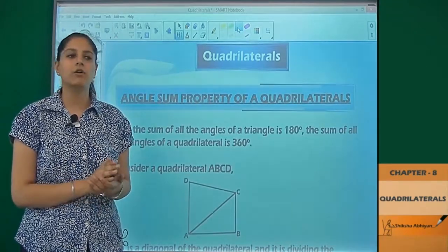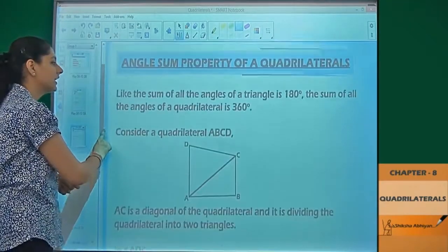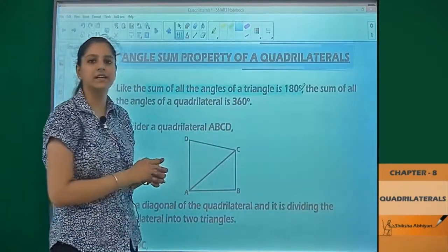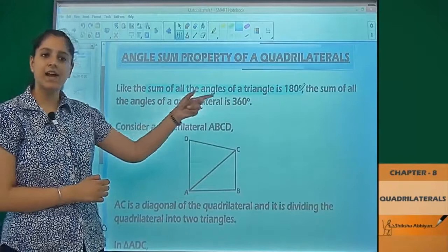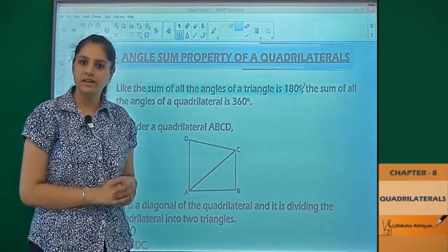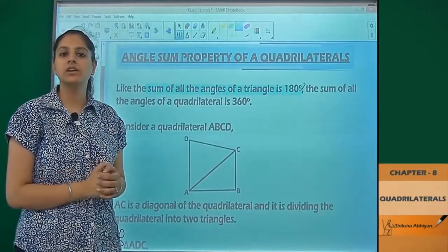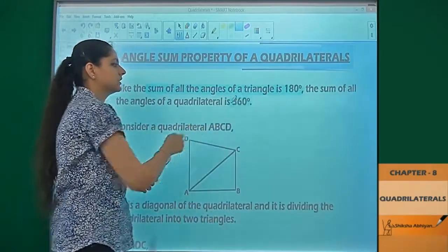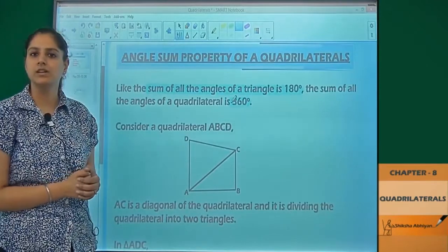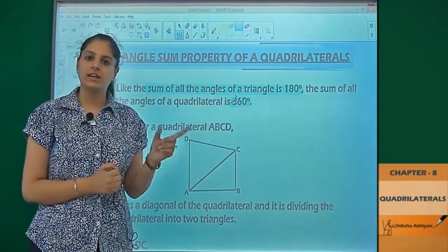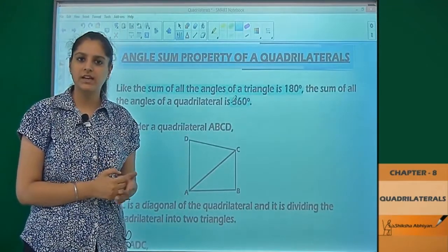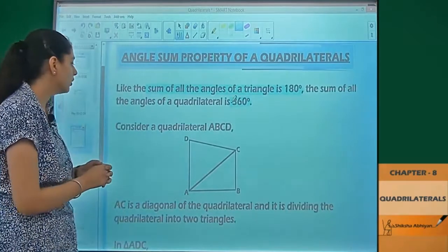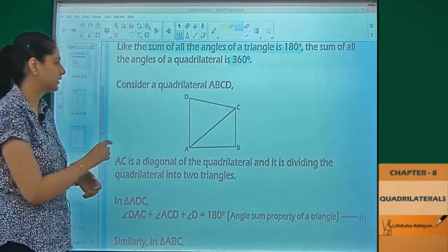This is the angle sum property of a triangle. In a triangle, the sum of all the angles is 180 degrees. Just as the sum of a triangle's three angles is 180 degrees, similarly the sum of a quadrilateral's four angles is 360 degrees. Sum of all the angles of a quadrilateral is 360 degrees. Why is it and how is it? Let us prove it.